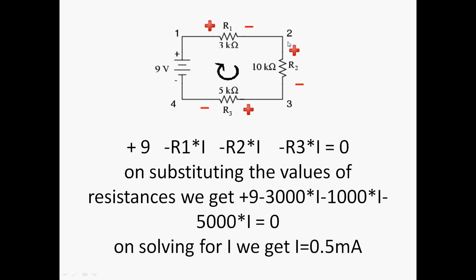Now travelling to R2: since we are travelling from the positive sign towards the negative sign, there is again a fall in potential, so a negative sign in the equation. The fall in potential is equal to the resistance value multiplied by the current passing through R2. Similarly, for R3, there is a falling potential since we are travelling from positive to negative terminal of the resistance. The sum of all these potentials, according to Kirchhoff's voltage law, should be equal to zero.